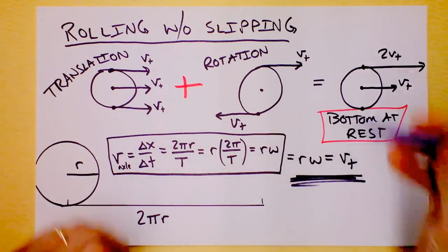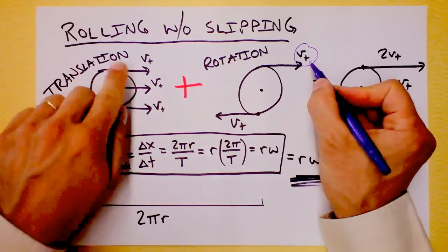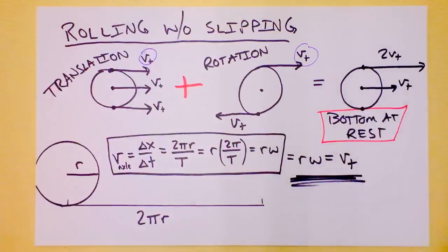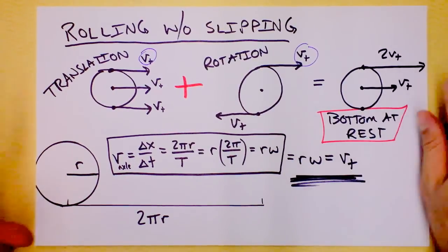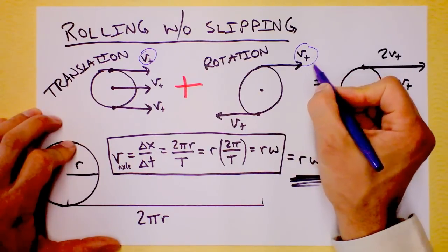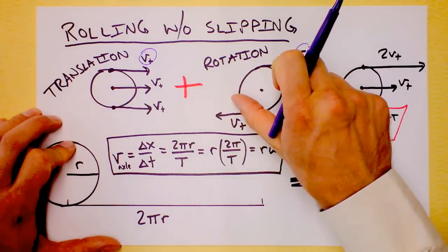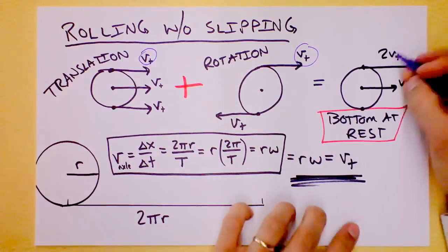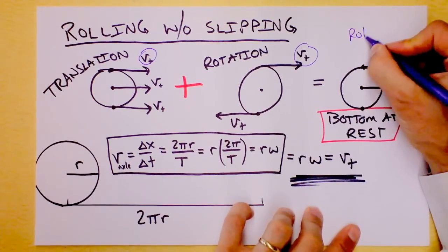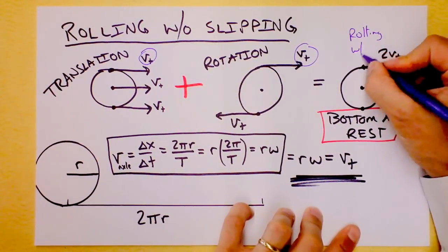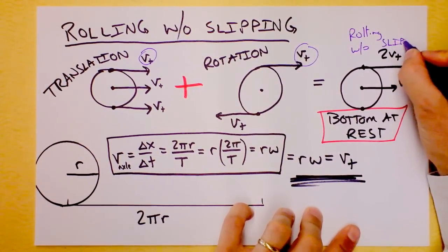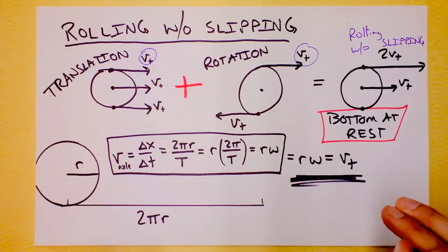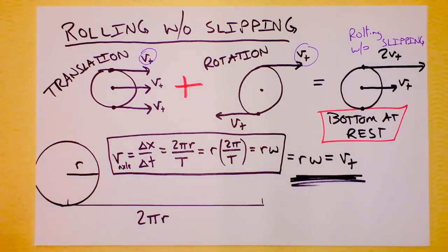What if we translate at the same rate at which the top would be moving if we were simply rotating? I'm going to say that one more time. What if the tangential speed of rotation were the same as the axle speed of translation? In that case, we would get this picture right here of rolling without slipping. Rolling without slipping is an awesome special case, and you're going to see it all the time in physics. Goodbye.